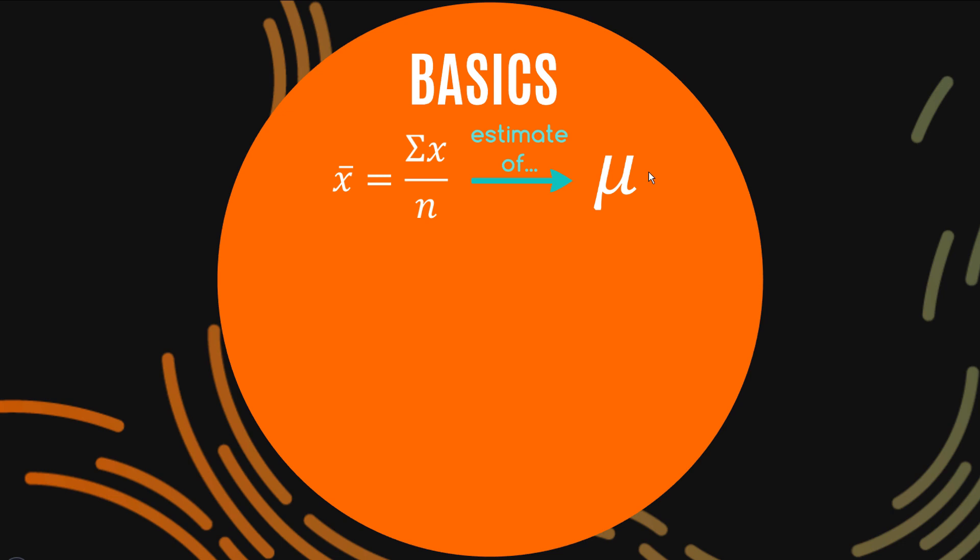And in doing so we calculate x bar and that provides us an estimate of this Greek letter mu which represents the population mean. So that's the whole principle behind statistics we have a sample we can create a statistic from that sample in this case a sample mean and that sample mean is an estimate of the true unknowable population mean.